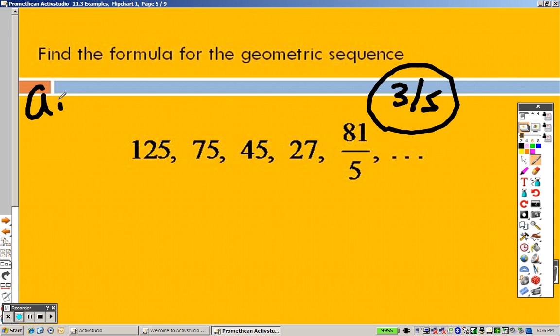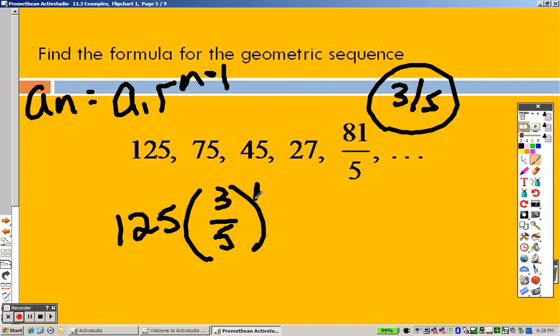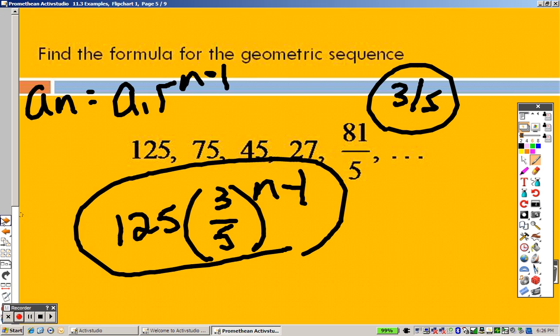So according to our formula, a sub n equals a sub 1, r to the n minus 1. Well, the first term is 125. I know that r is 3 fifths to the n minus 1. So there is the formula for the geometric one.